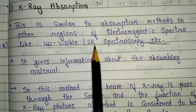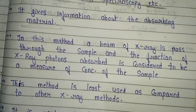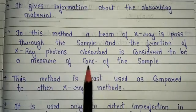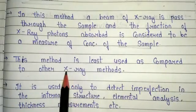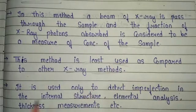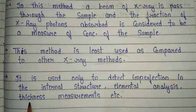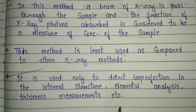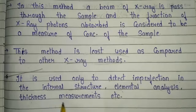X-ray absorption is similar to the absorption method used in ultraviolet spectroscopy. It gives information about the absorbing material. In this method, a beam of X-rays is passed through the sample, and the fraction of X-ray photons absorbed is considered a measure of concentration of the sample. This method is least used compared to other X-ray methods like X-ray diffraction and X-ray fluorescence. It is used only to detect imperfection in the internal structure of the sample, for elemental analysis, and for thickness measurement.